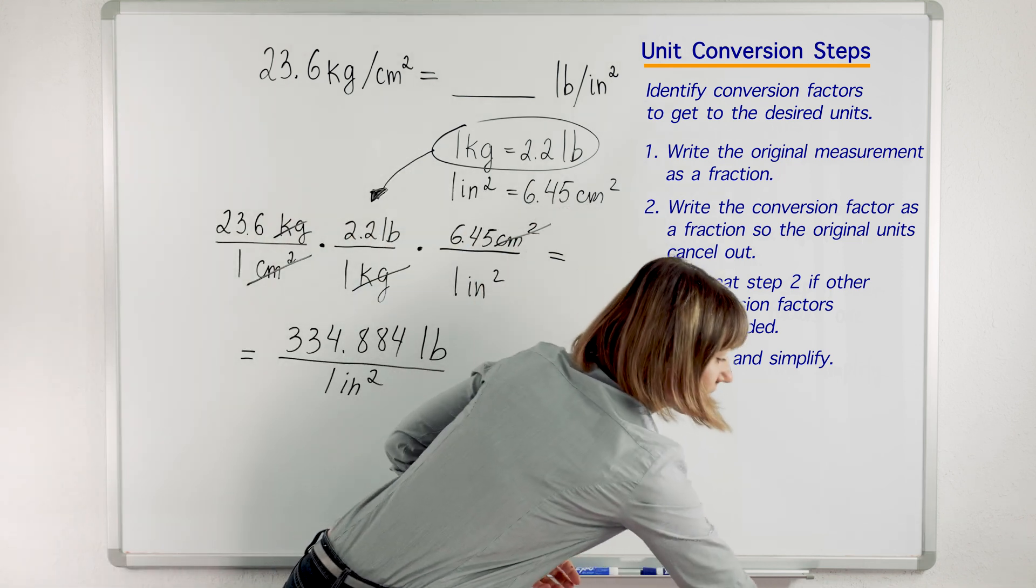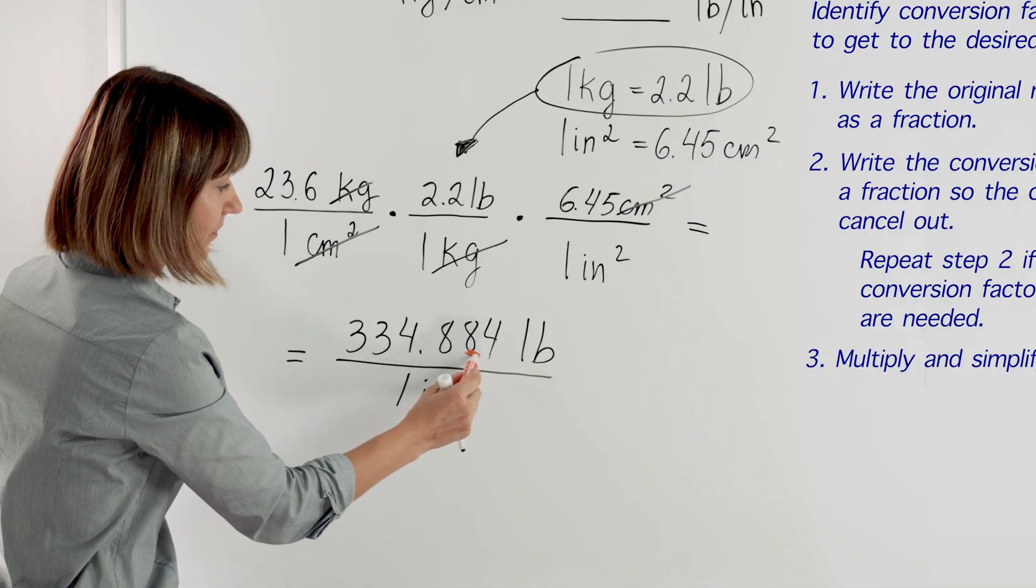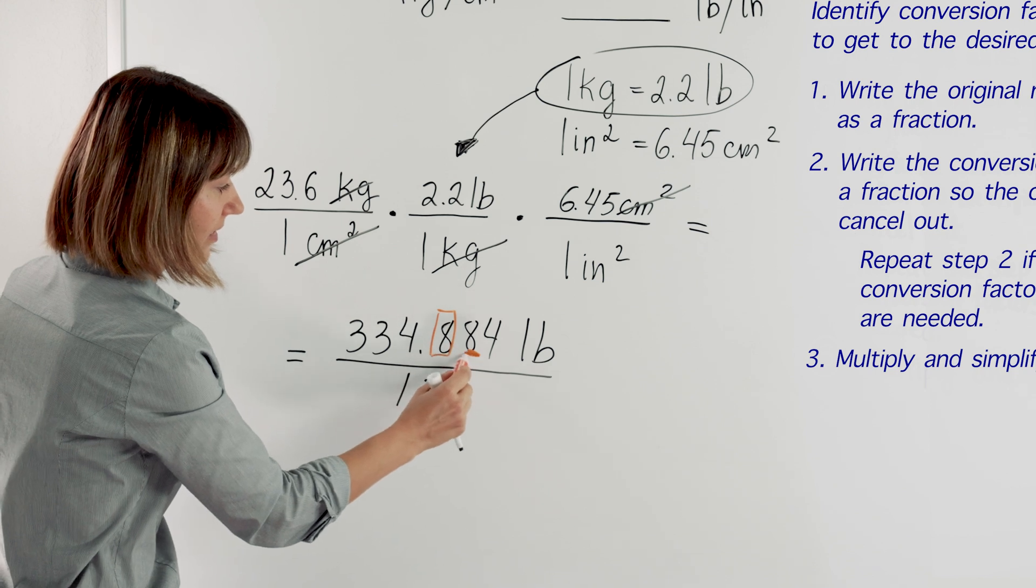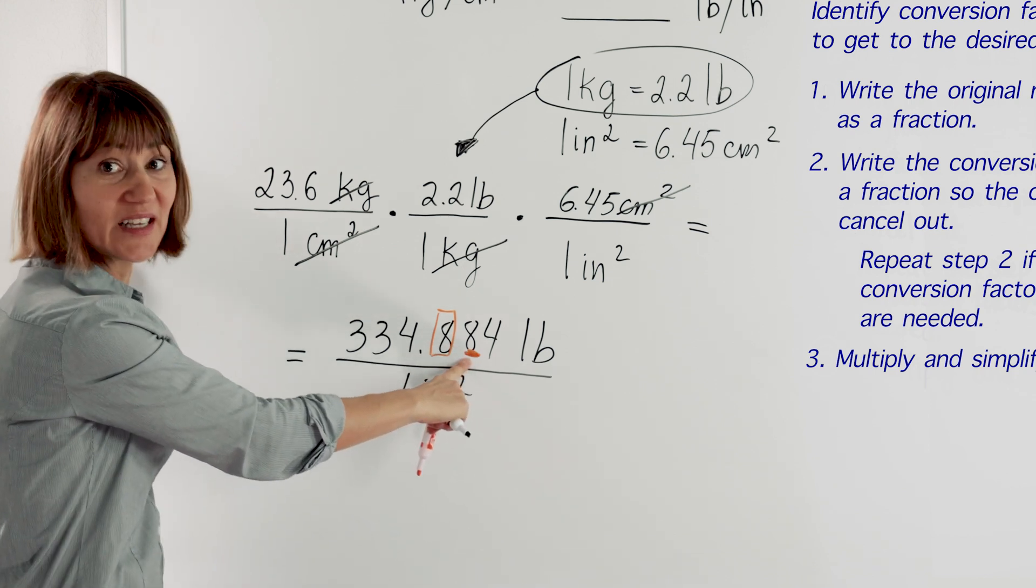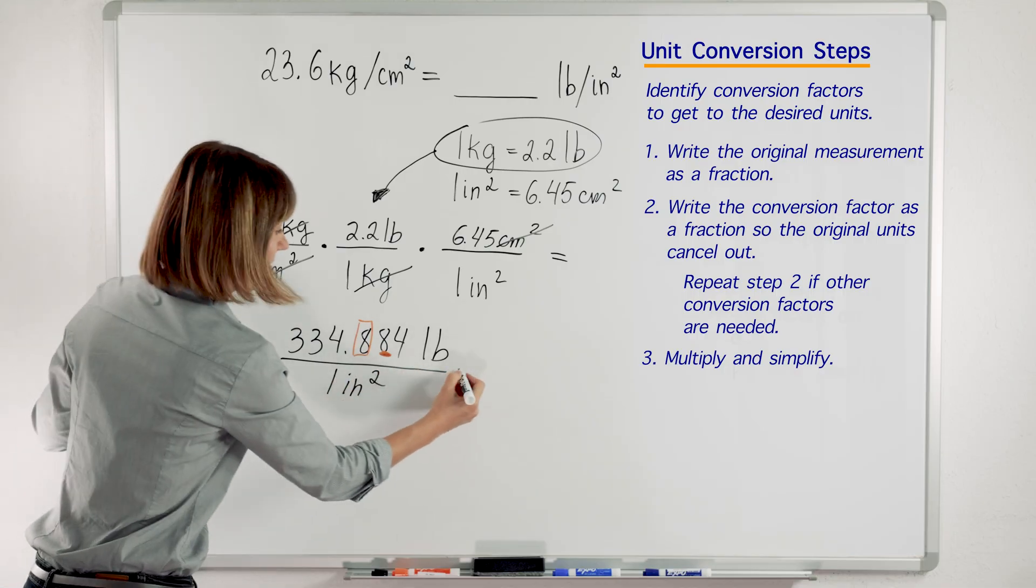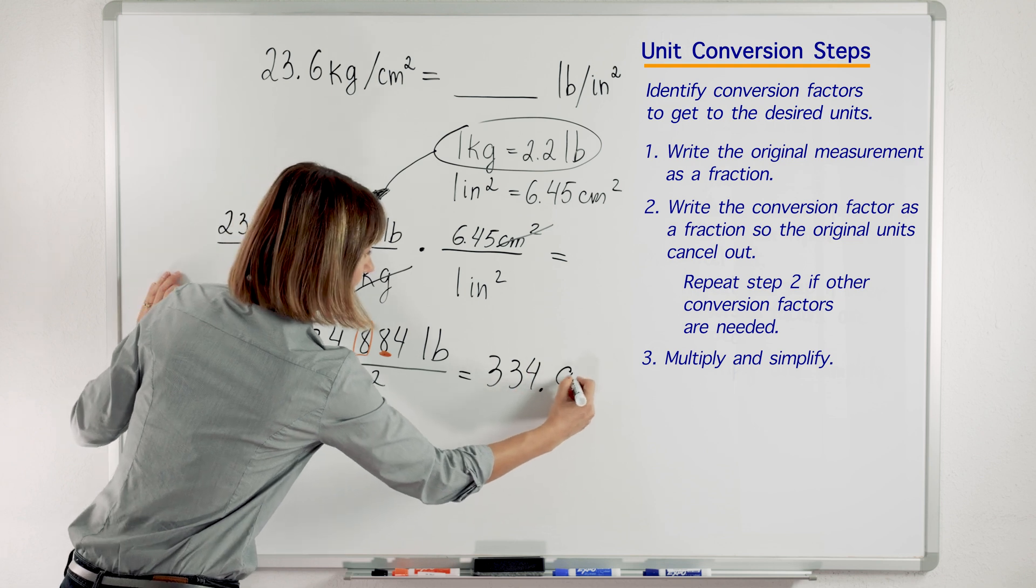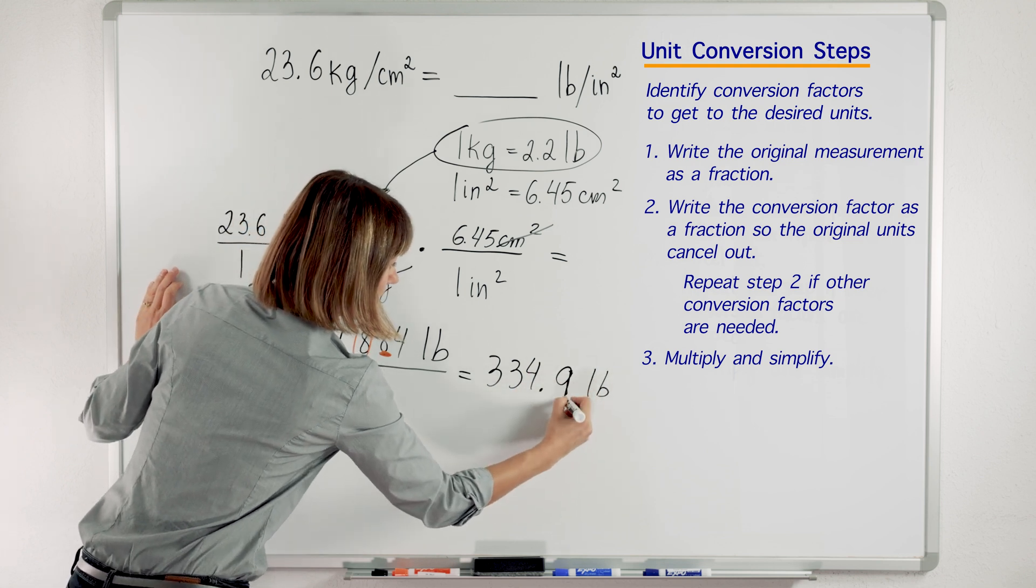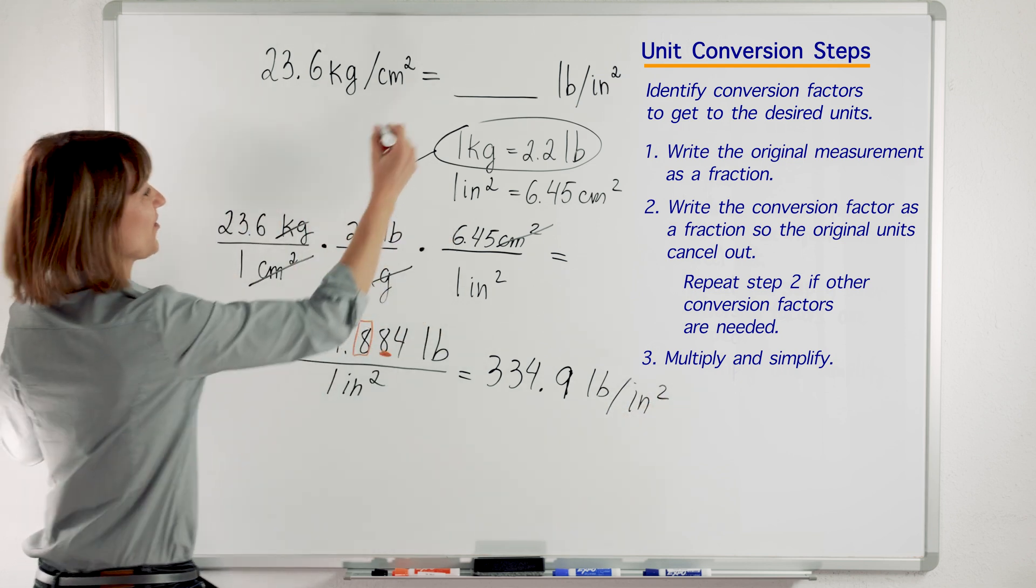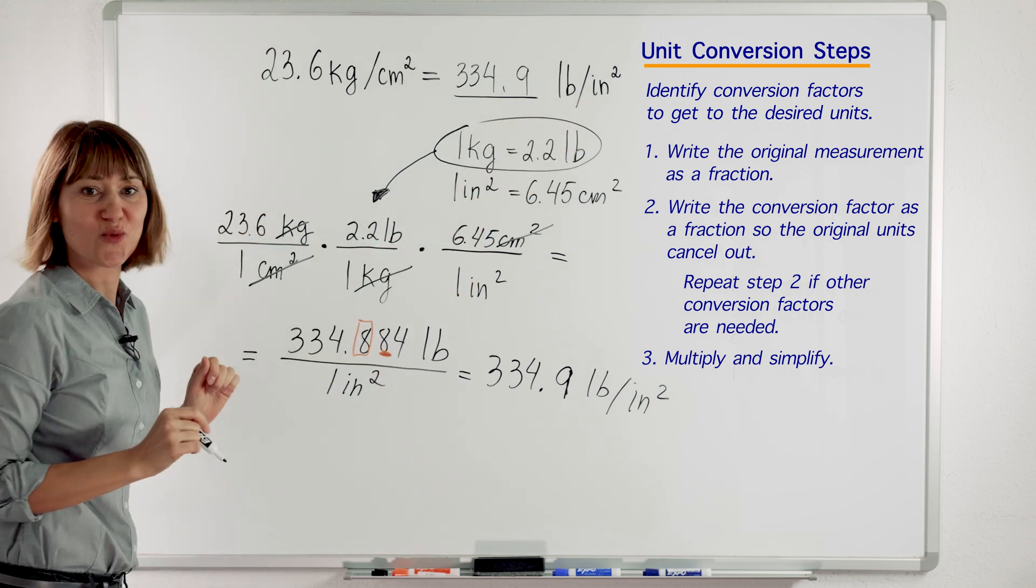We can round it to the nearest tenths. How do we do it? We look at this number. This is our nearest tenths. We look at this number, and since this number is greater than 5, we round the number to the left. So we will have 334.9 pounds per inch squared. We will write here 334.9 pounds per inch squared.